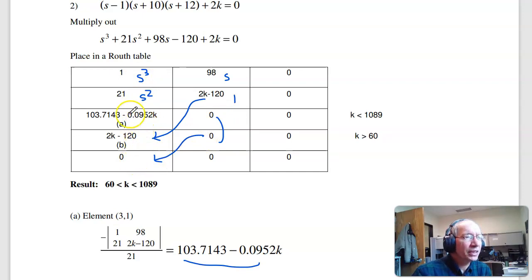The condition for stability is there could be no sign flips, so positive, positive. This has to be positive, meaning k is less than 1,089. This has to be positive, meaning k is bigger than 60. The range that satisfies both of those is k is between 60 and 1,089.